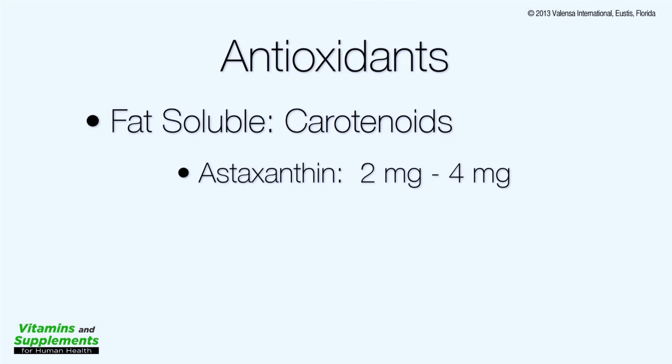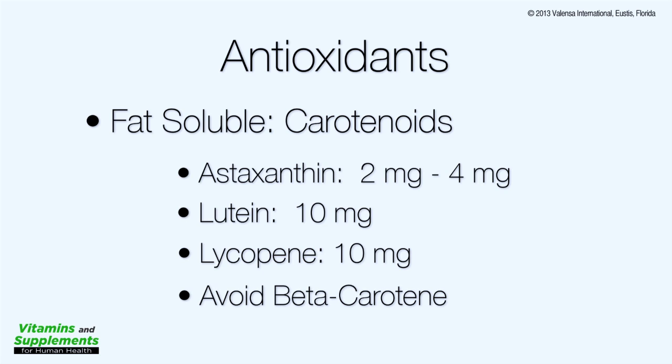Because if you take too many carotenoids like lutein, zeaxanthin or astaxanthin, or beta-carotene, you can turn orange. And that's not a good idea. So what I recommend is 2 to 4 milligrams of astaxanthin a day, 10 milligrams of lutein a day. For men especially, 10 milligrams of lycopene today. You're going to get your lycopene. Don't get it from tomatoes. Because with tomatoes, you're getting oxalic acid. You're getting the potential for kidney stones. I also highly recommend not taking a lot of beta-carotene. Get your beta-carotene from the food colorant where it's used as a food colorant and things like margarine and other foods. But beta-carotene in high doses is not safe.